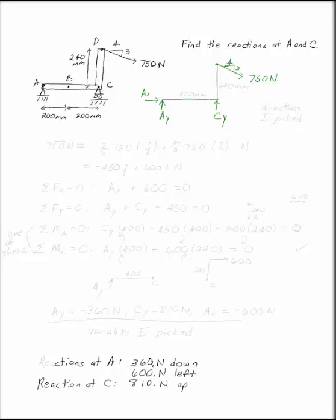So those are your points. You also need distances, so this is 400 millimeters and this is 240 millimeters. Point B doesn't actually do any good for you and there's no reason to include it.